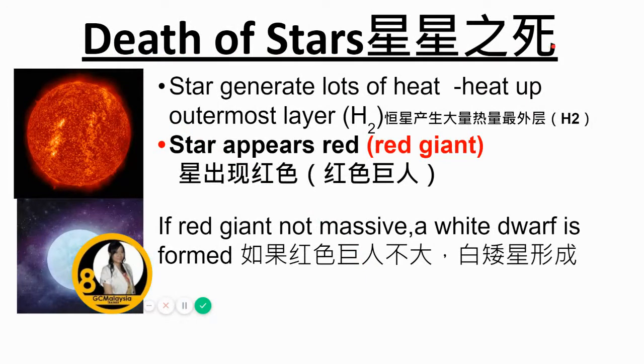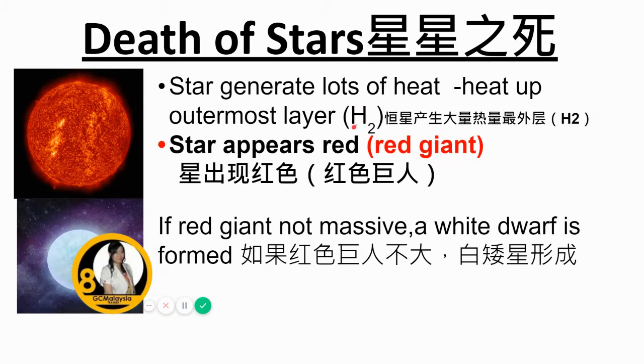The star generates lots of heat, which heats up the outermost layer. As a result, the star appears red in colour — this is called a red giant.